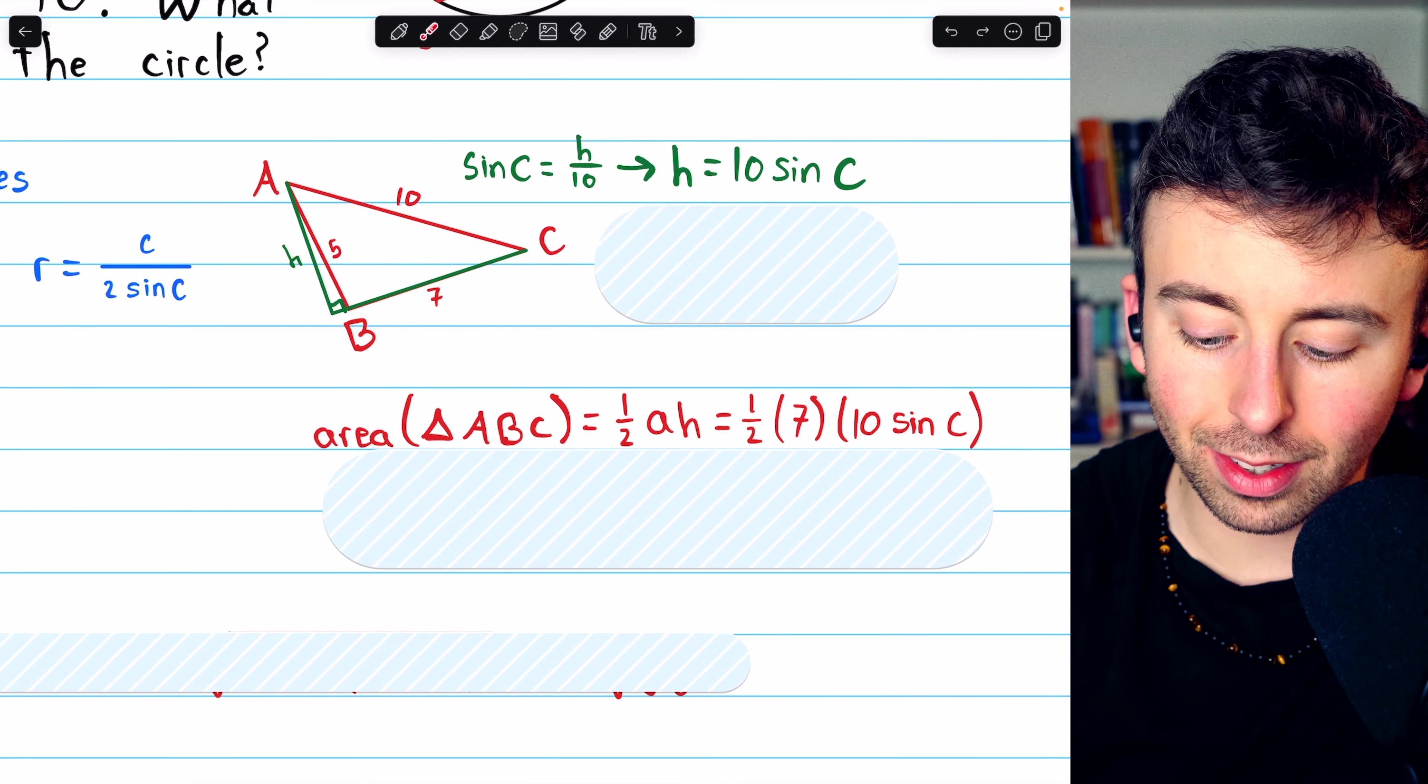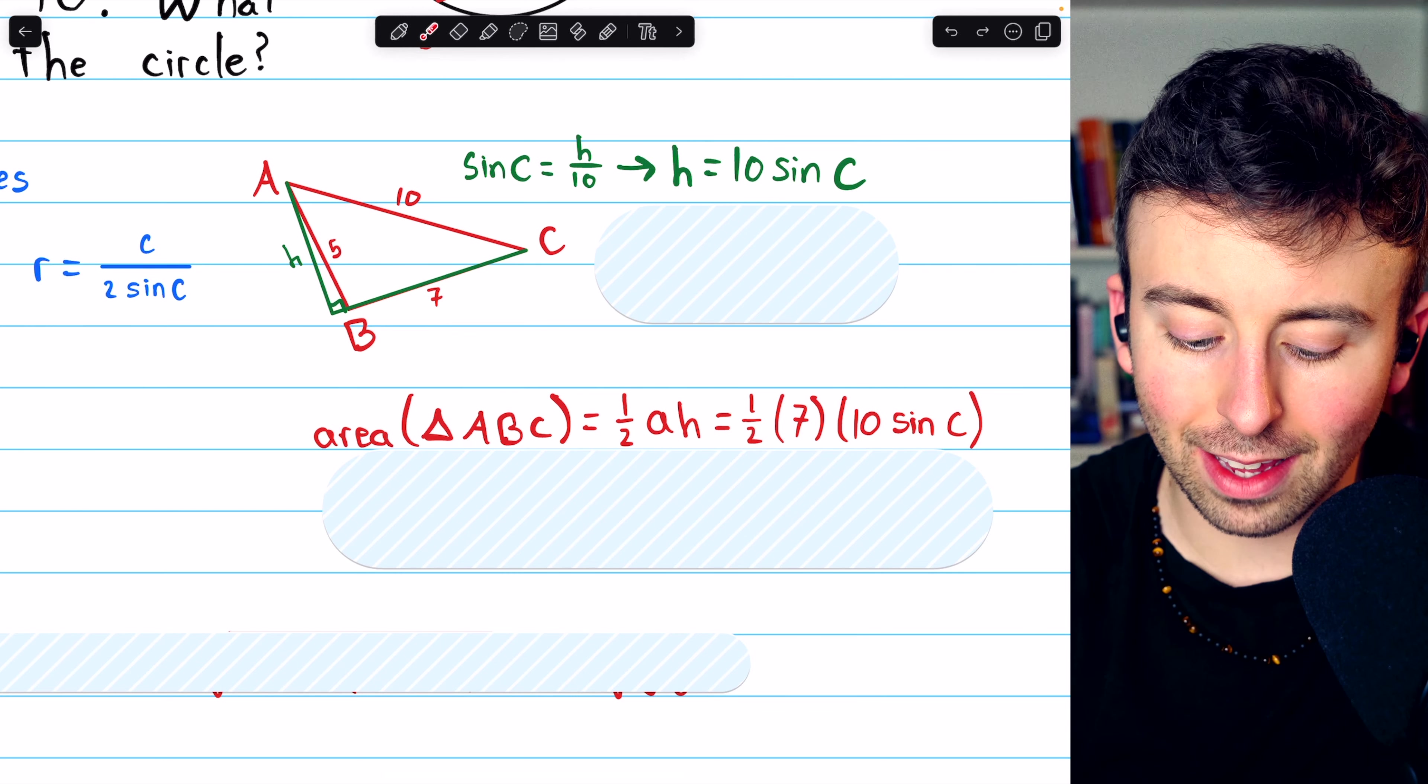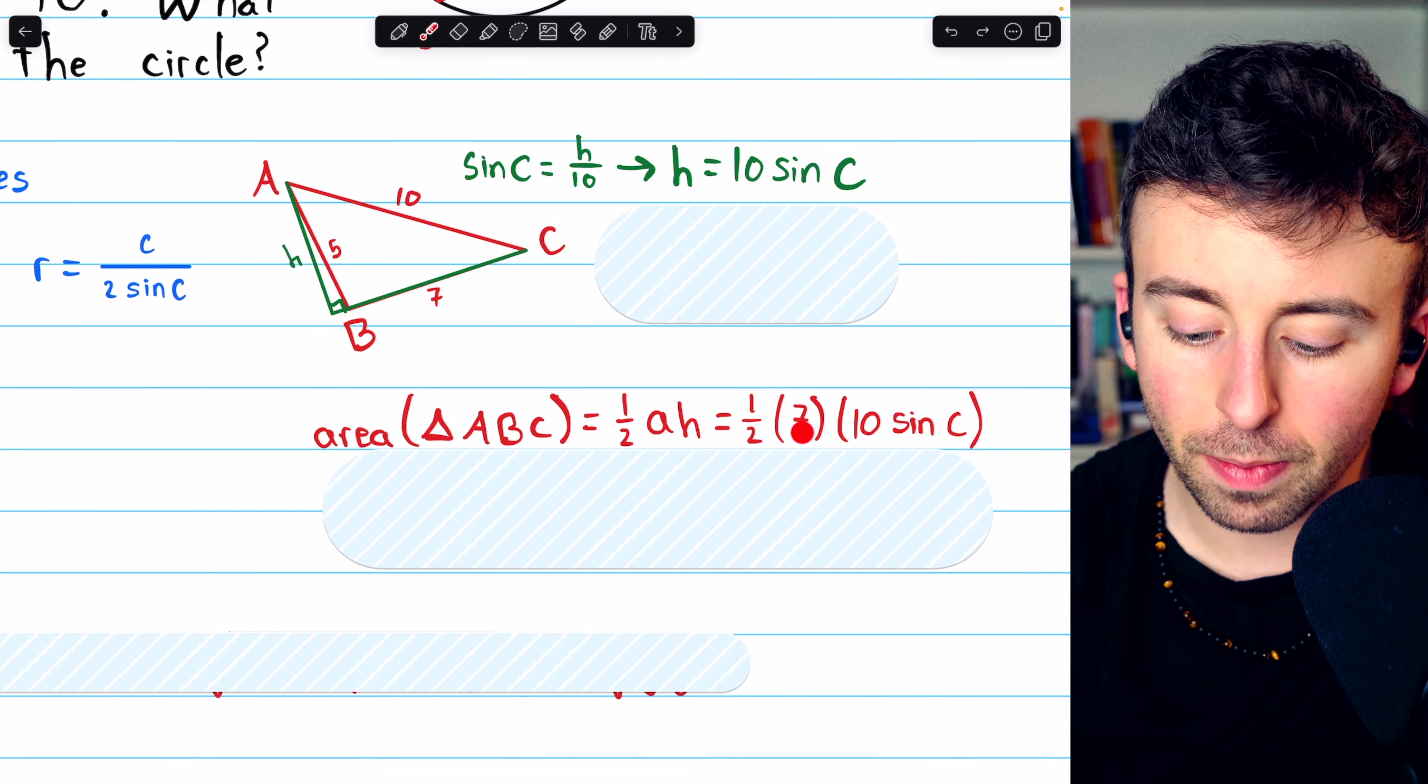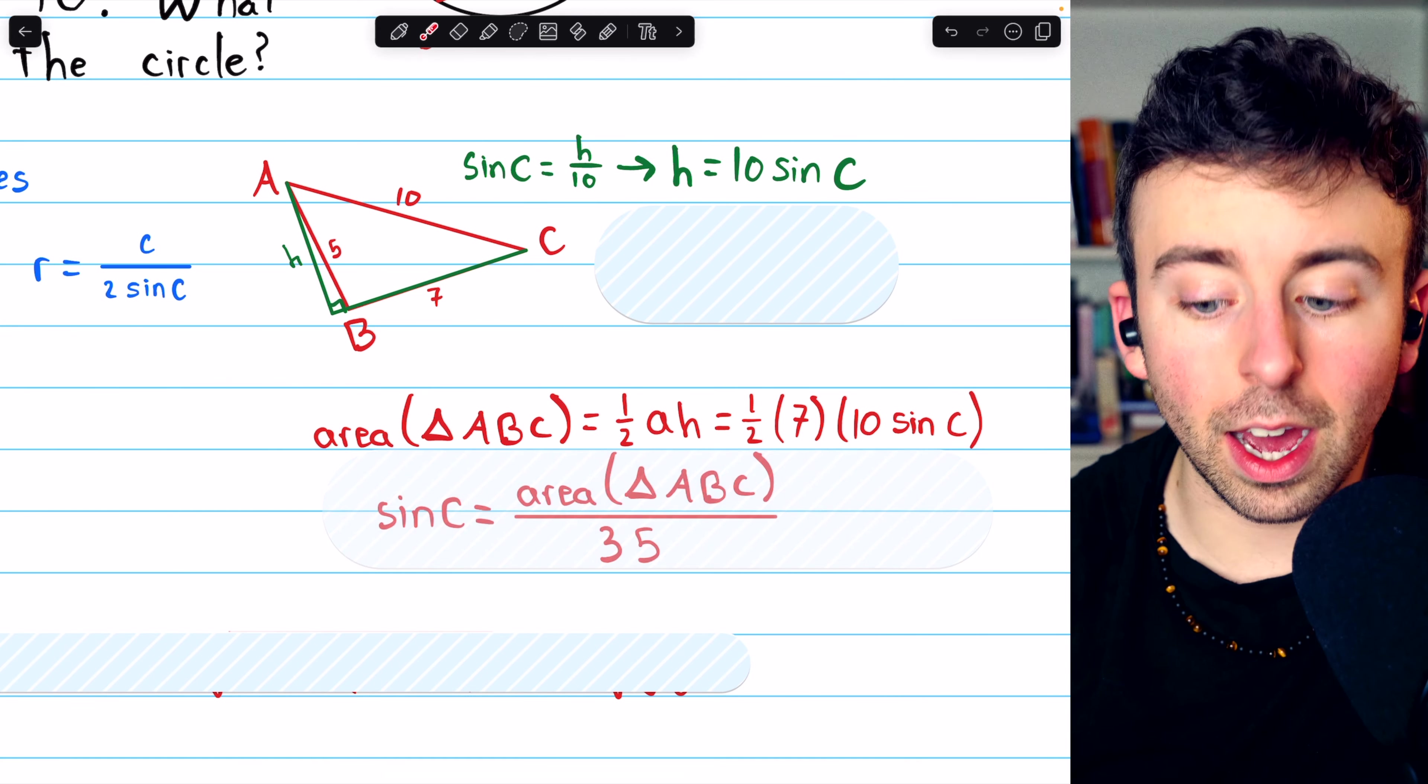and the height we know is 10 times sine C. So this is just 1 half times that side length of A, which is 7, multiplied by 10 sine C, which is the height.